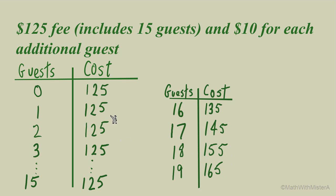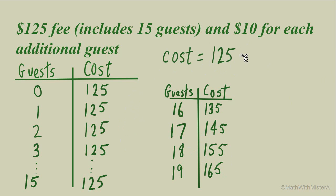Overall the rate of change is different, but if we look at the two pieces separately we can construct two separate linear pieces. The first part of the green plan has a constant cost of $125, but this only applies if we have 15 or fewer guests. So we add a note that the cost equals 125 only when g, the number of guests, is less than or equal to 15.